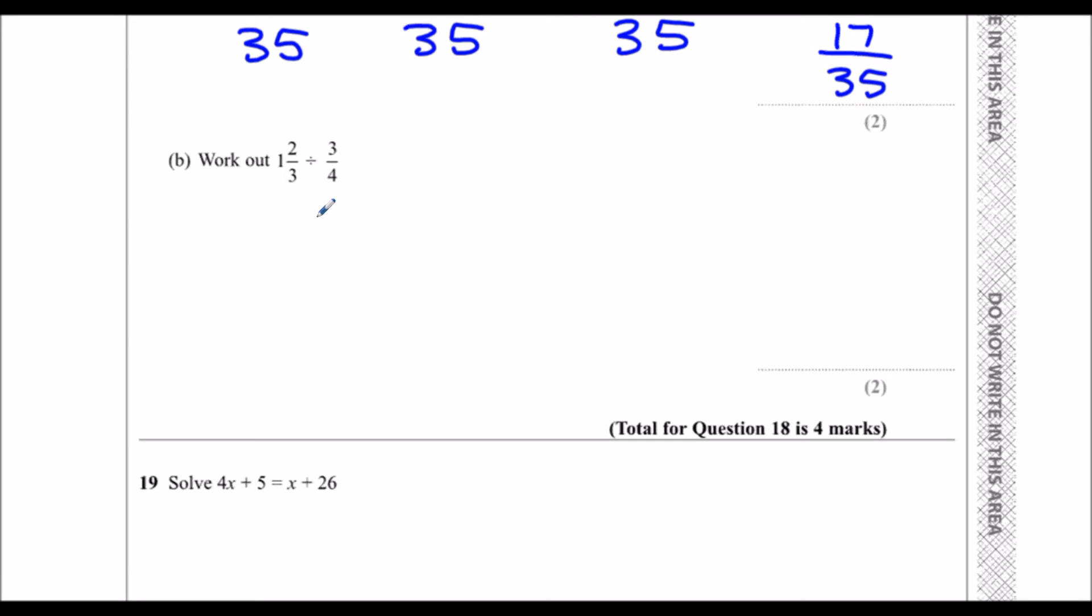So one whole one, one times three is three-thirds and two-thirds makes five-thirds. So one whole one is three-thirds, plus the two-thirds I've got here. So in total I've got five-thirds.